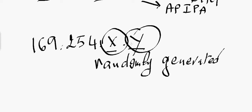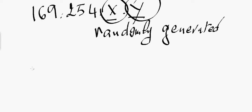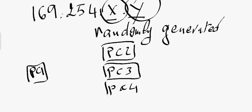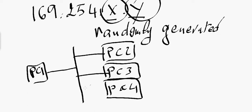Consider the following scenario: I have PC1, PC2, PC3, and PC4 connected to the same LAN, forming one local area network. These computers do not have static IP addresses and did not get a dynamic IP address — maybe they are not configured for that, or the DHCP servers are not available. So the only way left is that each PC is going to assign an IP address to itself.